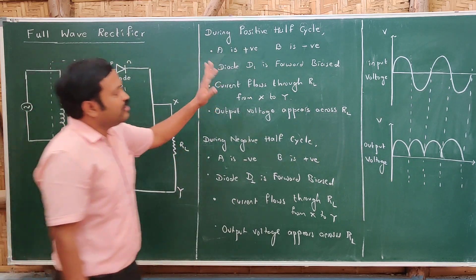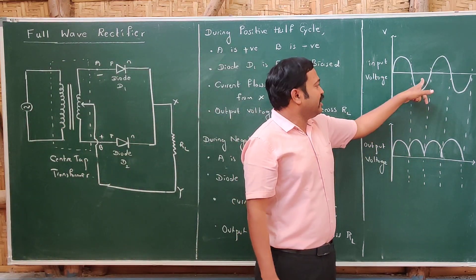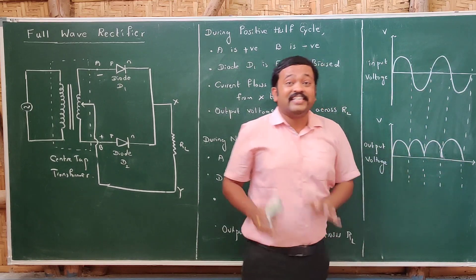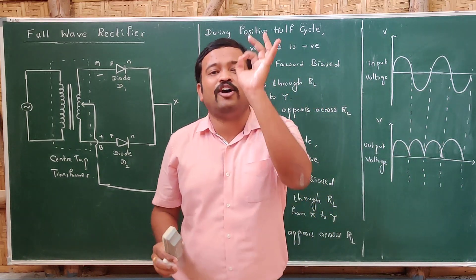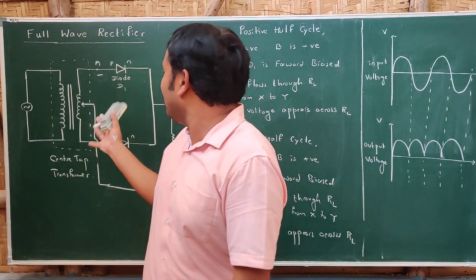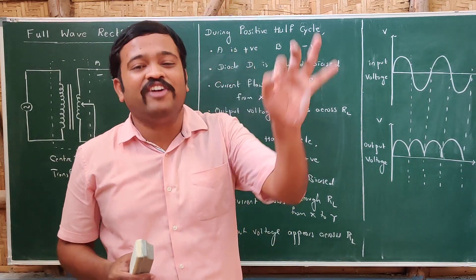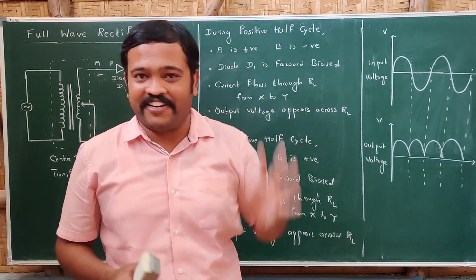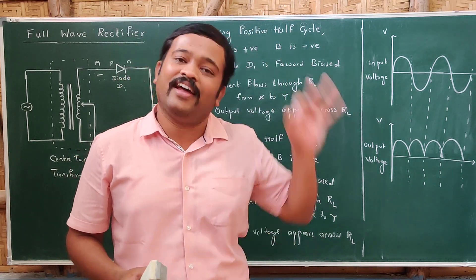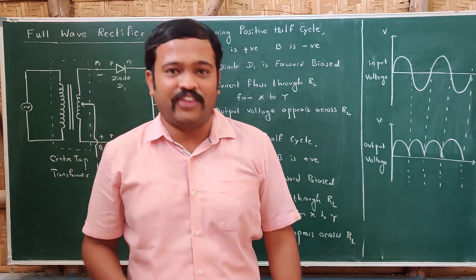Looking at the waveform: during the positive half cycle, output is obtained; during the negative half cycle, output is also obtained. Since output is obtained during both cycles, this kind of rectifier is called a full wave rectifier. So we have studied both types: the half wave rectifier and the full wave rectifier. Thank you.